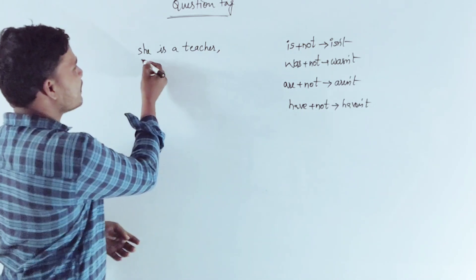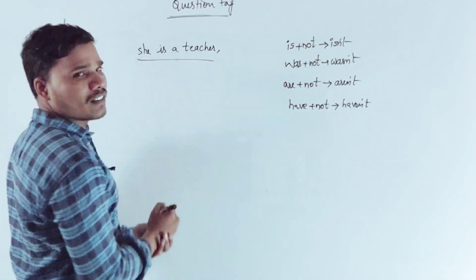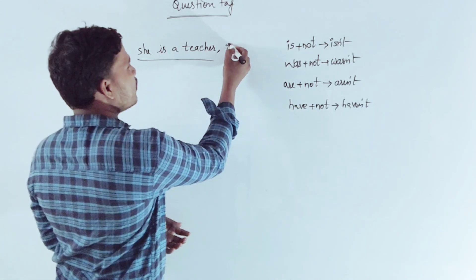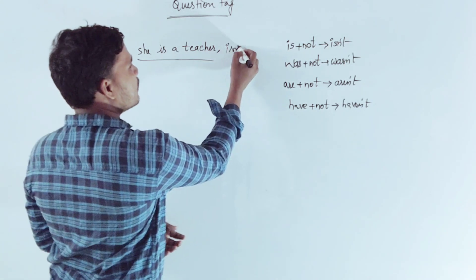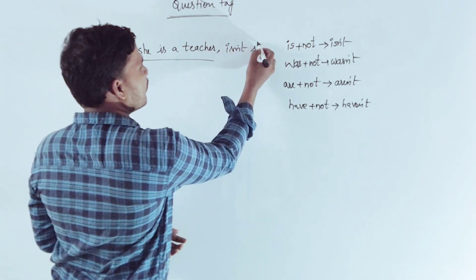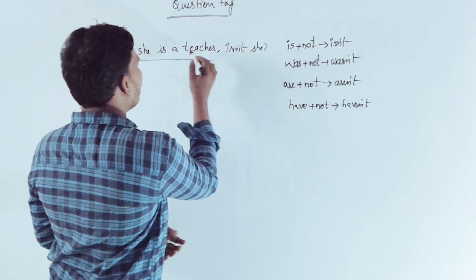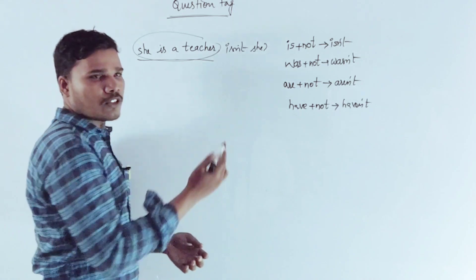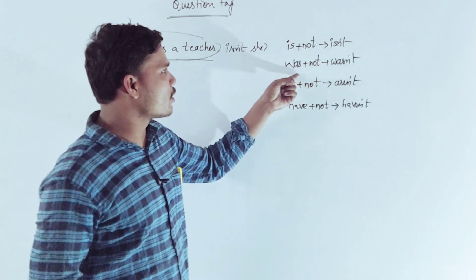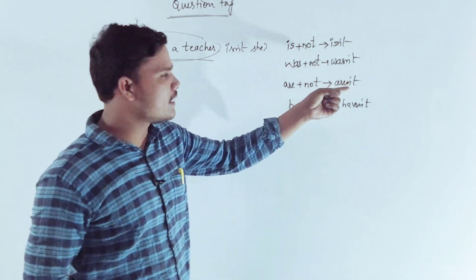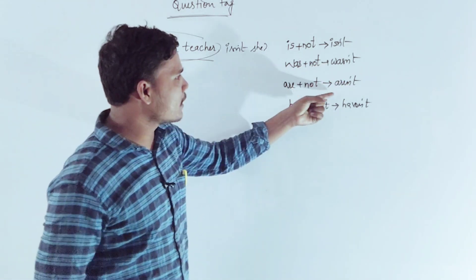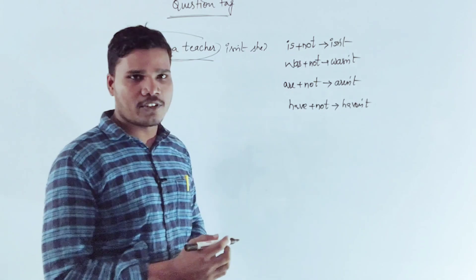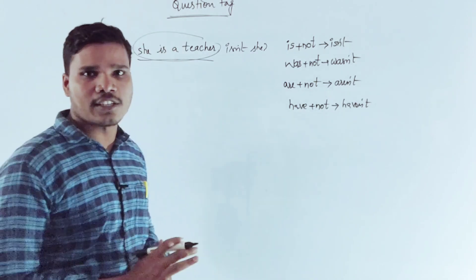We have a question: 'She is a teacher.' If she is a teacher, we have a negative question tag. The auxiliary 'is' and subject 'she' are used. How do you understand this?